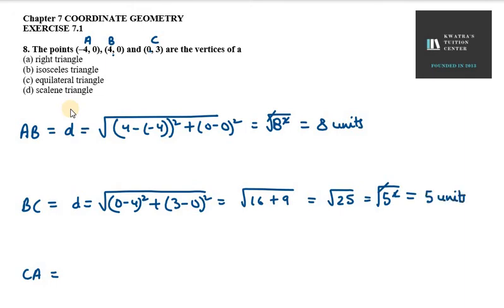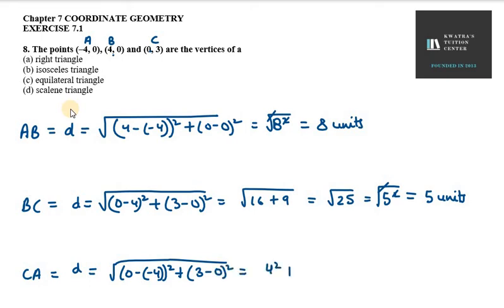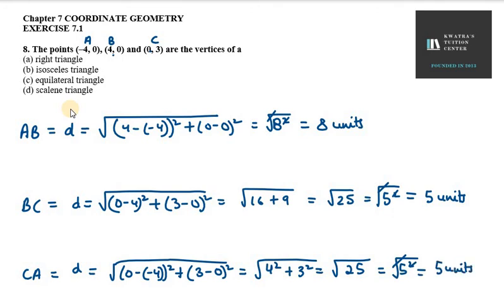Now for the third side CA, we calculate (0 minus minus 4) whole square plus (3 minus 0) whole square. That is 4 squared plus 3 squared, which is 16 plus 9 = 25. Since 25 = 5 squared, the square root cancels out, giving CA = 5 units.